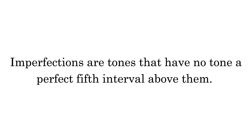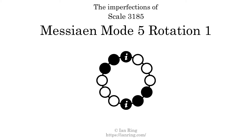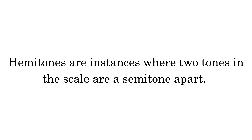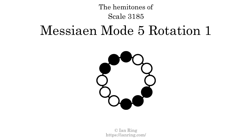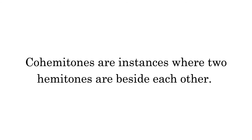Imperfections are tones that have no tone a perfect 5th interval above them. This scale has 2 imperfections, at the positions indicated here and here. Hammertones are instances where 2 tones in the scale are a semitone apart. This scale has 4 hammertones, at the positions here, here, here, and here.